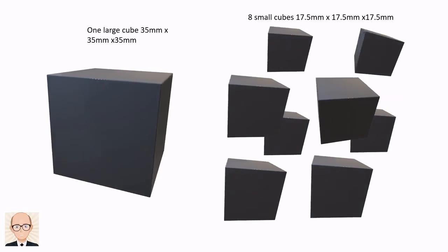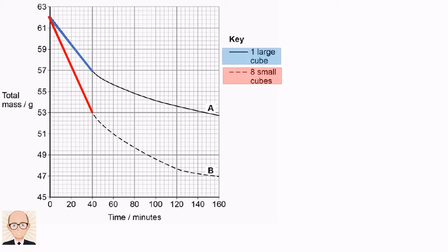The rate of osmosis is shown by the gradient of the graphs. Because the gradient is calculated as the change in y divided by the change in x. In this case, y represents the mass of potato and x shows the time. The rate is calculated as the change in mass divided by the time.